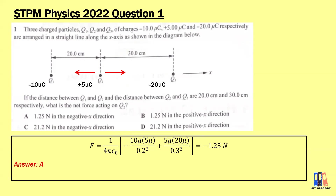Before we proceed to the calculation, we first need to determine the direction. Between q1 and q2, they are unlike charges, so there is an attraction force. For q2, it will be to the left towards q1. Between q2 and q3, they are also unlike charges, so q2 will also be attracted to the right. So we can see there are two opposing forces: the attraction force from q1 and the attraction force from q3.